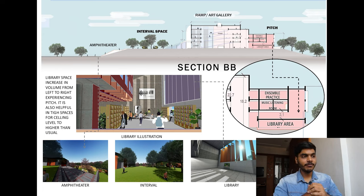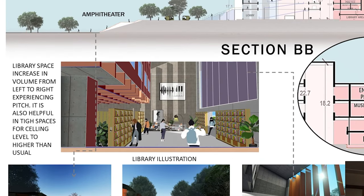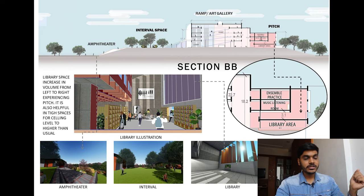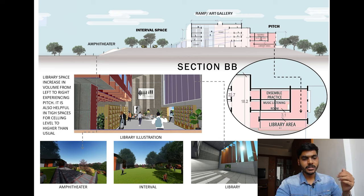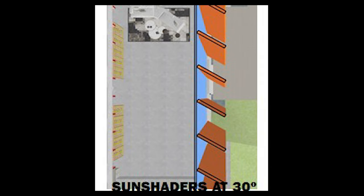Next we see Section BB, which shows the amphitheater, interval space, ramp and art gallery, and pitch depicted from architecture. The library space shows an increase in volume from left to right, experiencing pitch. It is also helpful in tighter spaces for the ceiling level to be high — so it has both a conceptual meaning and a functional meaning. Here you can see images of the library shaders, interval space, amphitheater, and a detail of the sun shader.